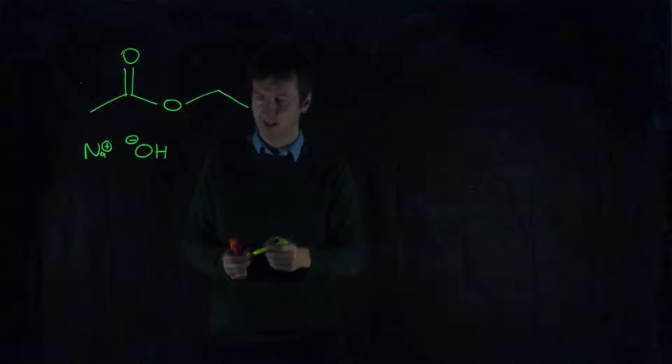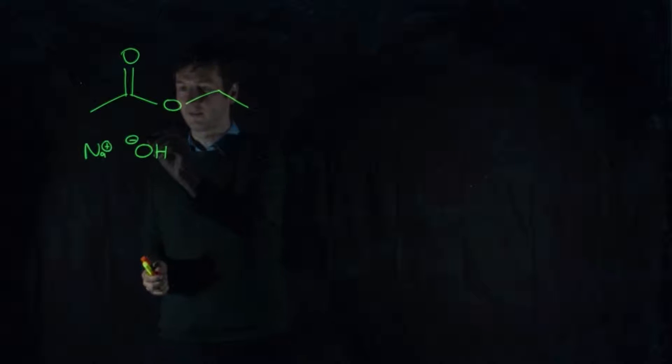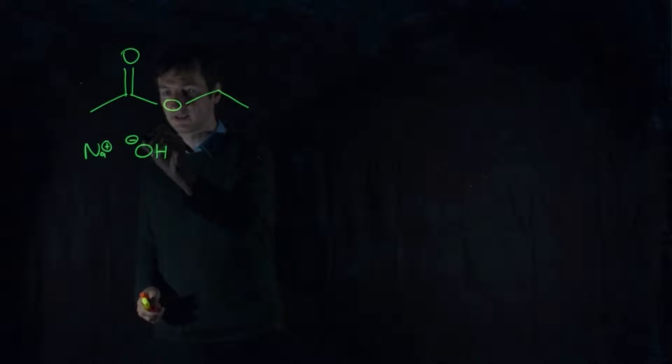So the first thing we have to do is identify our electrophile and our nucleophile. And our electrophile is going to be the thing that wants the electrons, and the nucleophile has to be the hydroxide because it has a negative charge on it. So in this case, it's going to act as a nucleophile, not a base.